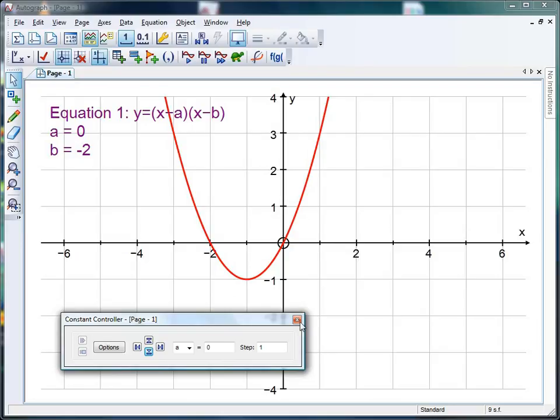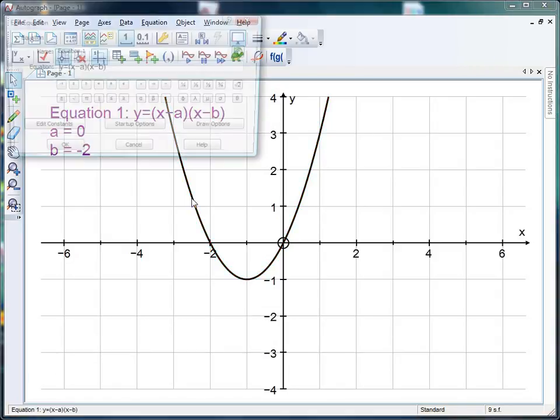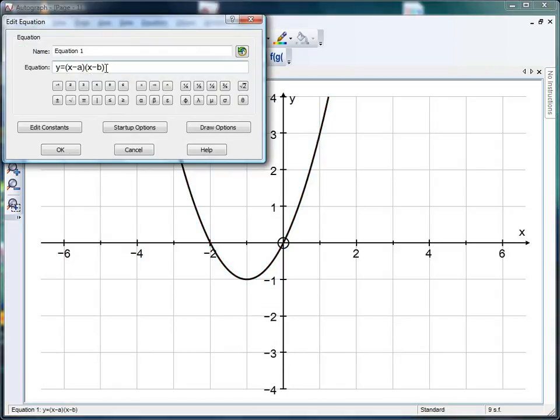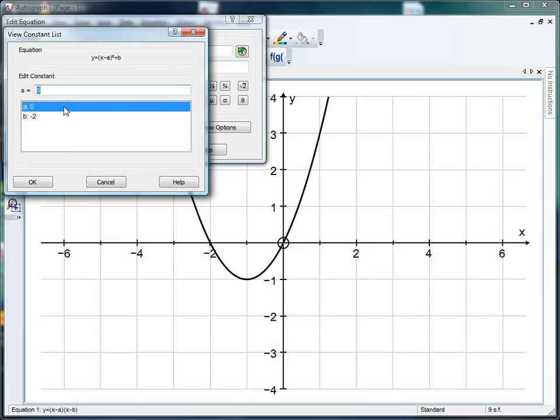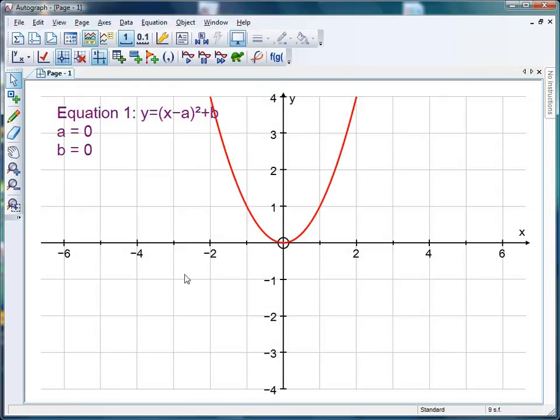You can also do a third version of this. If I just double-click here, we can do the classic completing the square version. So if I go for y equals (x minus a) squared and I add on b. Again, I'm just going to check my constants first, I don't want anything changing that I don't want to. So a is going to stay at zero and I'm going to put b at zero. So again I should get my y equals x squared graph.